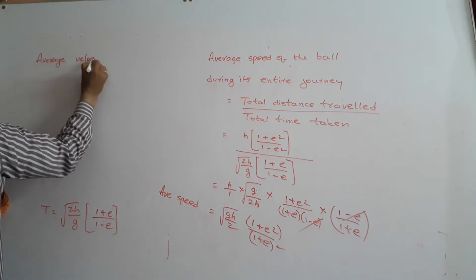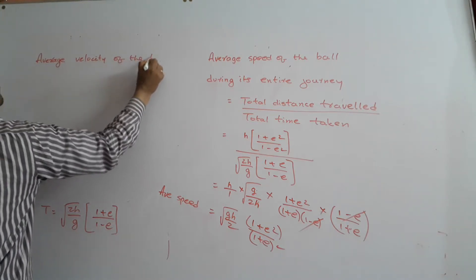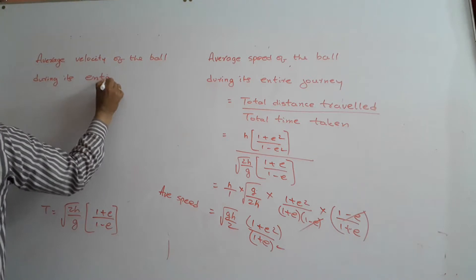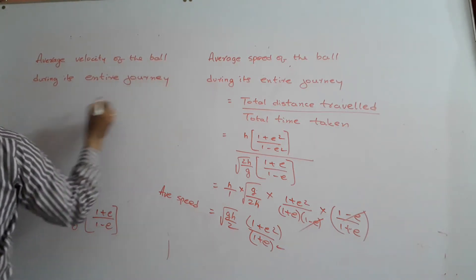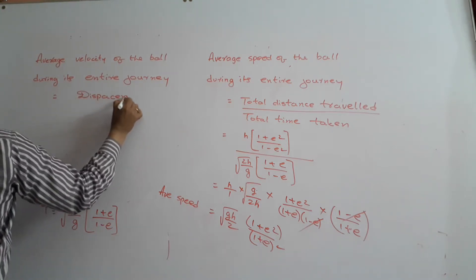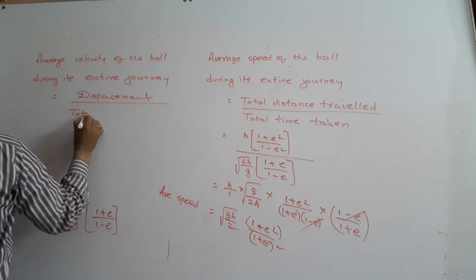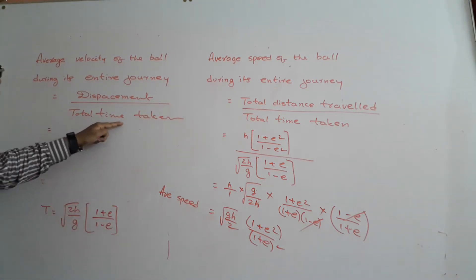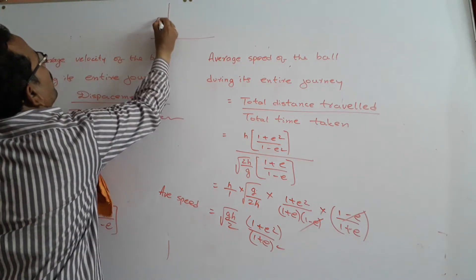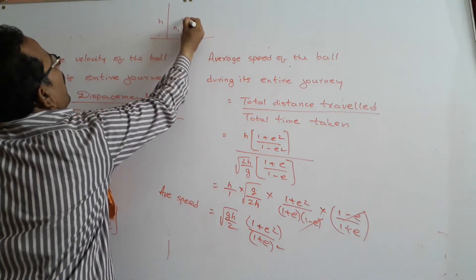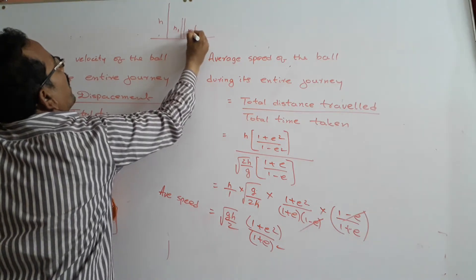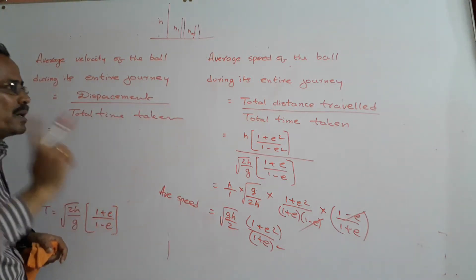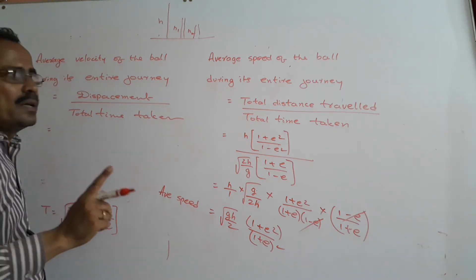The average velocity of the ball during its entire journey equals displacement divided by total time taken. The body falls from height H, rises to H1, falls back H1, rises to H2, falls back H2, and so on. When measuring displacement, we must consider the direction of motion.